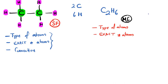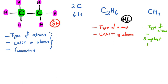What about the simplest ratio between the atoms? If I take carbon and hydrogen from C₂H₆ and divide by two, it gives us CH₃. In this formula I have the type of atoms and the simplest ratio between the elements — one carbon connected to three hydrogens. This type of formula we call empirical formula.